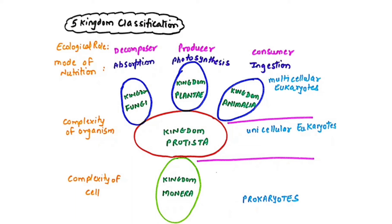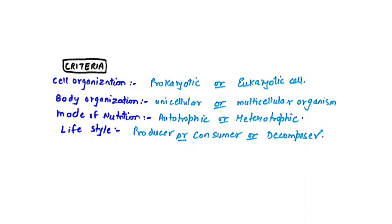The criteria considered by Whittaker for classifying organisms into five kingdoms were: first, cell organization — whether the cell is prokaryotic or eukaryotic; second, body organization — whether the organism is unicellular or multicellular; third, mode of nutrition — whether autotrophic or heterotrophic; and fourth, lifestyle — whether it is a producer (autotrophic), consumer (heterotrophic), or decomposer (saprotrophic). Based on these characters, Whittaker came up with Monera, Protista, Fungi, Plantae, and Animalia.